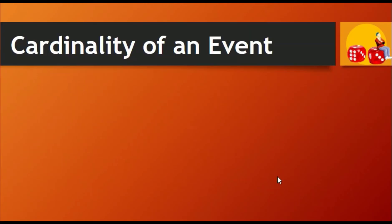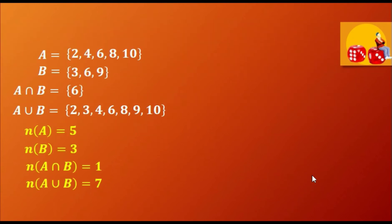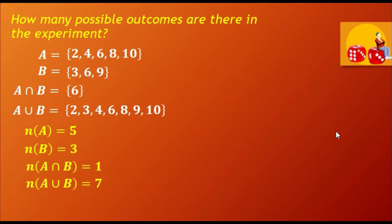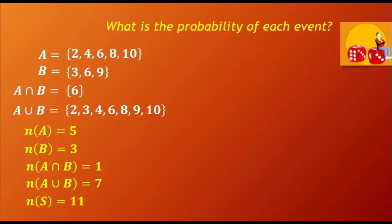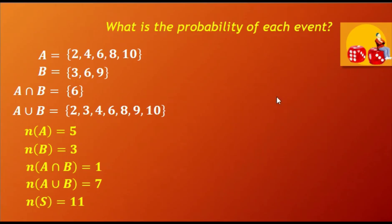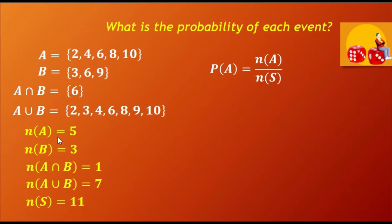Notice that the cardinality of an event is just the number of outcomes in that event. Now let's talk about the experiment. How many possible outcomes are there in picking a ball? Since there are 11 balls numbered 1 to 11, there are 11 possible outcomes when you pick a ball. This set of outcomes is called the sample space, denoted by S, and the cardinality of this sample space is 11. These cardinalities are very important in getting their probabilities. To get the probability of A, we will get the ratio of the cardinality of A and the cardinality of S. The cardinality of A is 5 and the cardinality of S is 11, so we have 5 over 11.